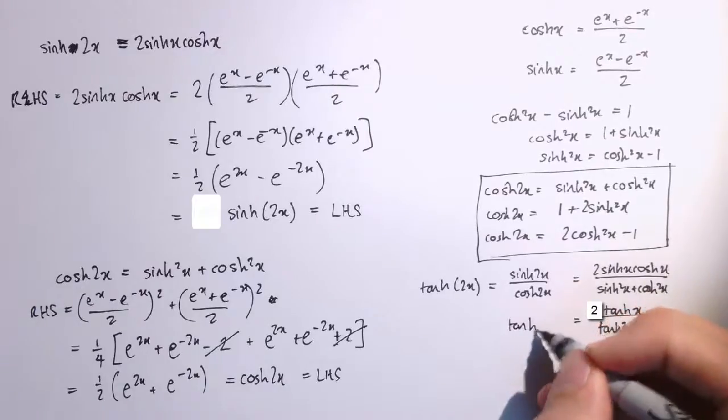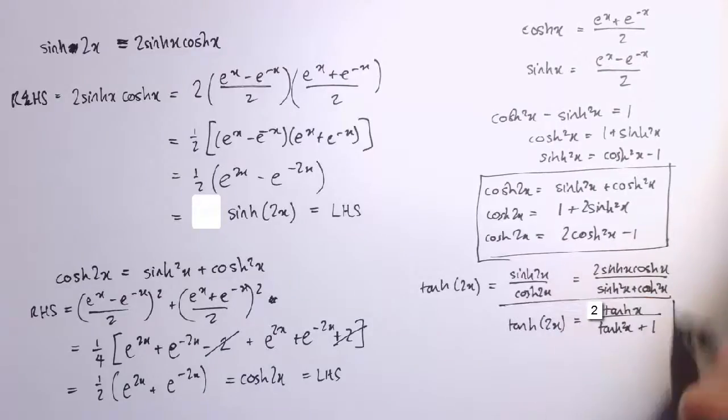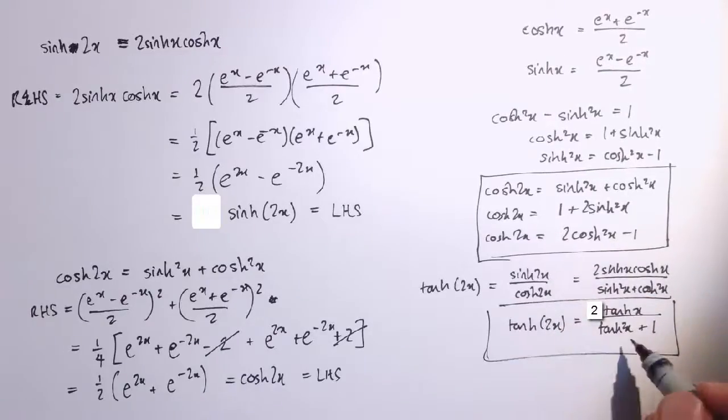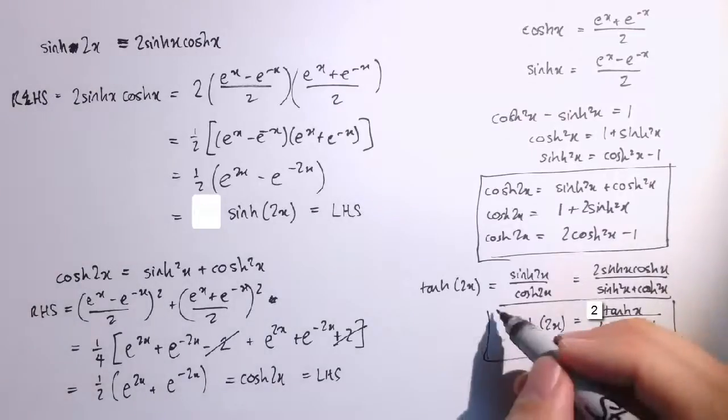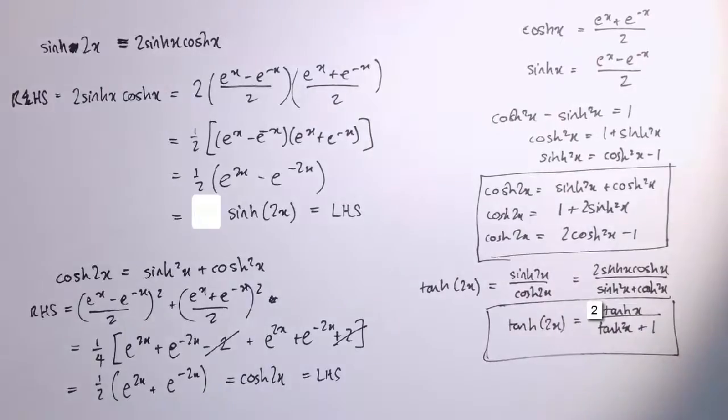So there we go, we've got a double angle identity for tanh here, that again looks quite similar to the results for ordinary tan, and they all look a bit like the ones for sine, cos, and tanh with just with the signs changed a little bit. As I say, that's typical of identities for hyperbolic functions, they're very similar to the trigonometric identities, but in some places you have a negative where you had a positive or vice versa.